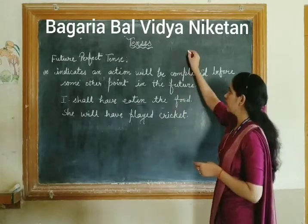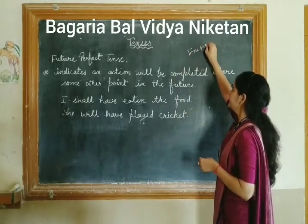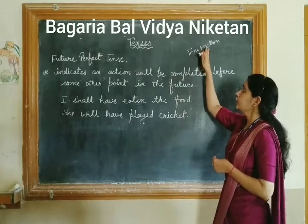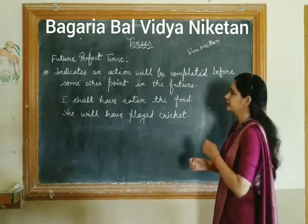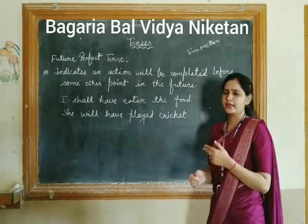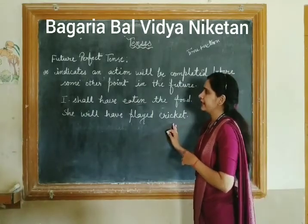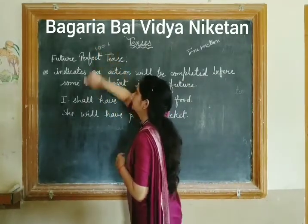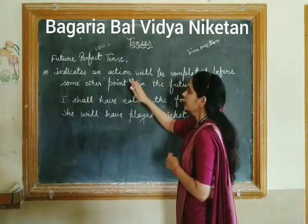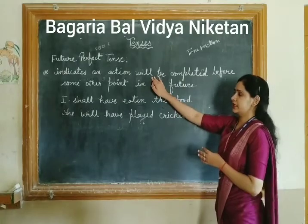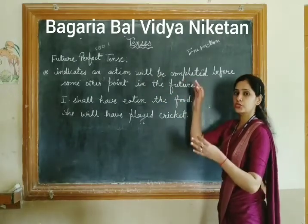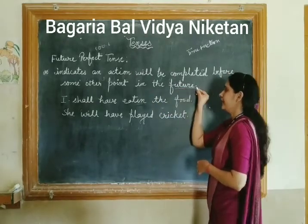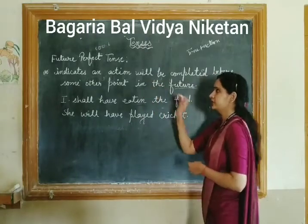Tense is a combination of time and action — it tells us the time and tells us about the action, whether it has started, is ongoing, has finished, or will happen. So future perfect will talk about actions in the future that will be 100% completed — it indicates an action that will be completed before some other point in the future.